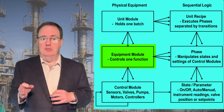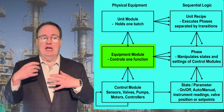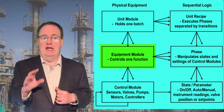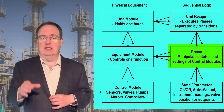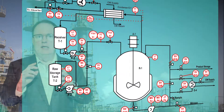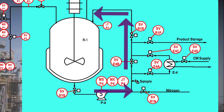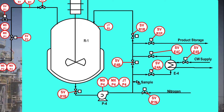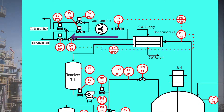A unit is made up of several equipment modules — collections of control modules or devices that can carry out a task for that unit. A phase for an equipment module is the sequential logic that accomplishes one task. For example, a reactor exit piping equipment module could have a phase for circulating and sampling the reactor and a second phase for discharging. A batch reactor could have a pressure equipment module with a phase that vents positive pressure and a second phase that pulls vacuum with a vacuum pump.